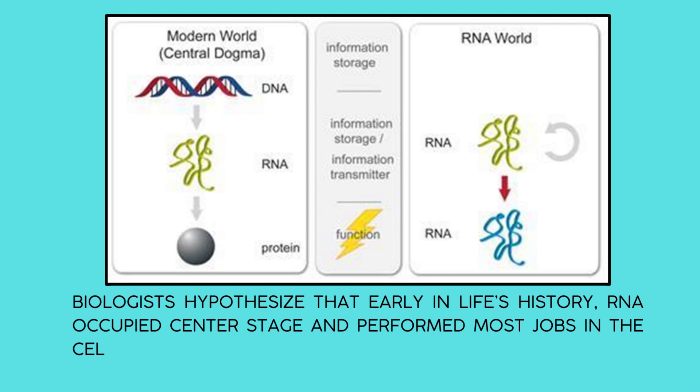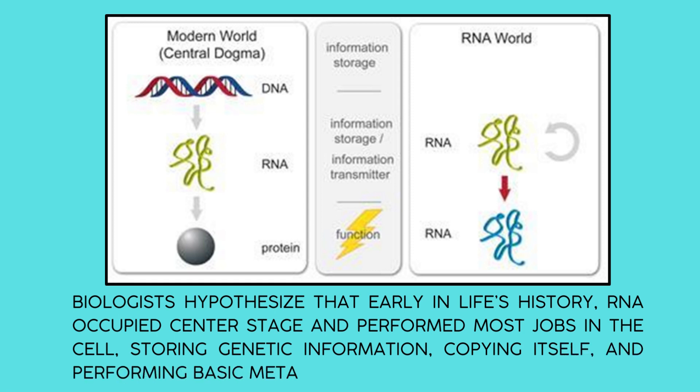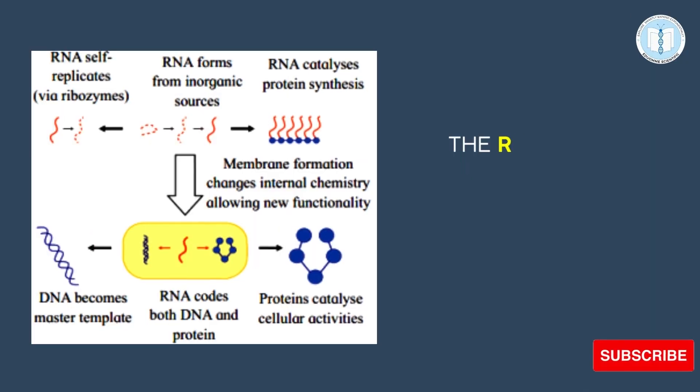A key step in the origin of life was the evolution of a molecule that could copy itself. Once it was discovered that RNA could both carry information and cause chemical reactions like those that would be required to copy a molecule, RNA became the prime suspect for the earliest self-replicating molecule.